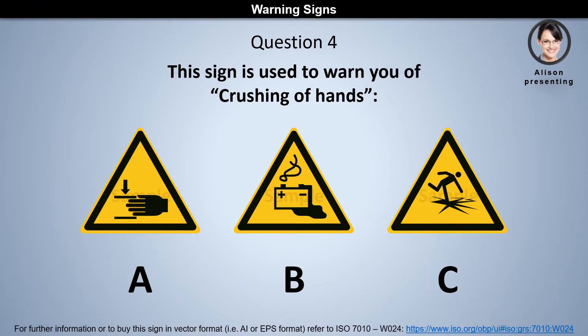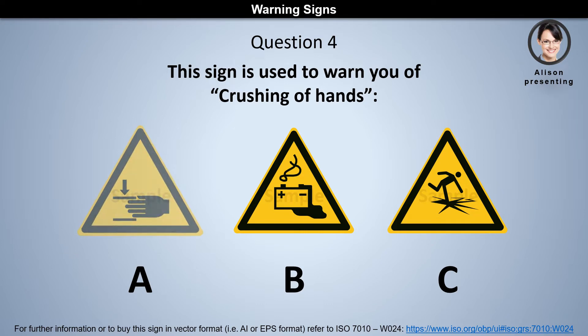Question 4. This sign is used to warn you of crushing of hands. Is it A, B, or C? The answer is A.